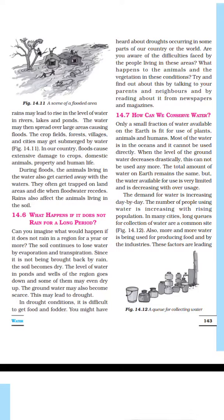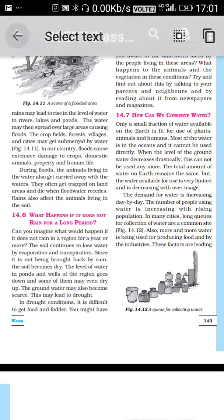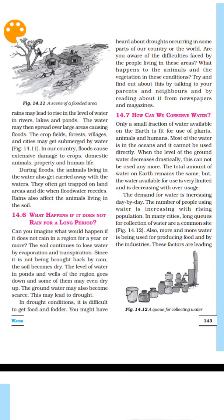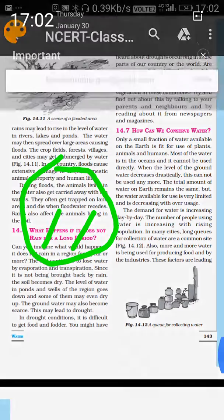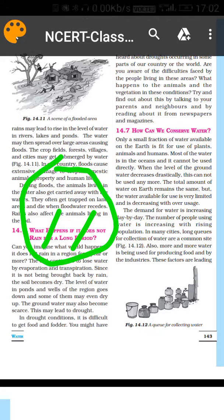What happens if it does not rain for a long time? The water levels drop and there are fewer drops available. The water that remains evaporates. This leads to drought conditions.